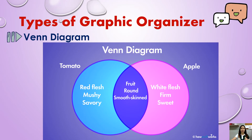Second, we have the Venn diagram. A Venn diagram is a type of graphic organizer used to show the overlapping relationships between various categories of ideas, things, events, mathematical expressions, or logical concepts. This is a simple example of a Venn diagram. It makes it easy to see at a glance what a tomato has in common with an apple and what traits are different.